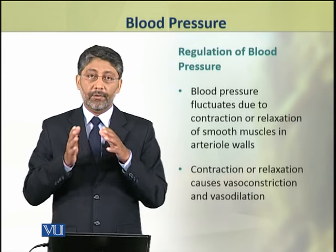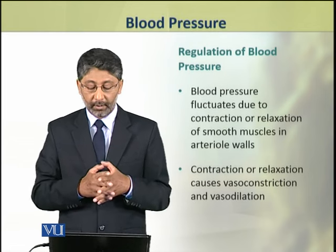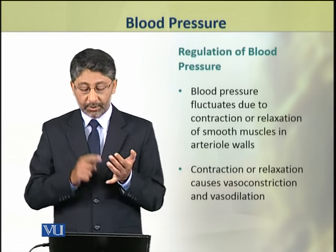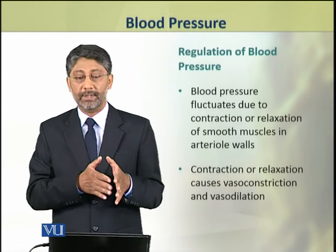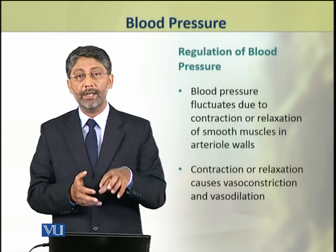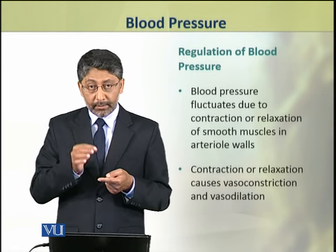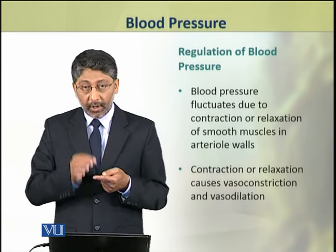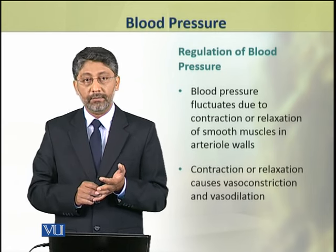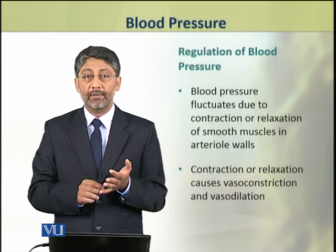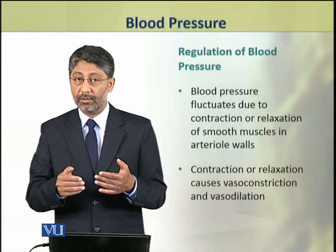Dear students, now we shall discuss the regulation of blood pressure. Blood pressure fluctuates due to the contraction or relaxation of smooth muscles of the arterial walls. In the walls of arterioles, contractions and relaxation of smooth muscles cause either vasodilation or vasoconstriction.